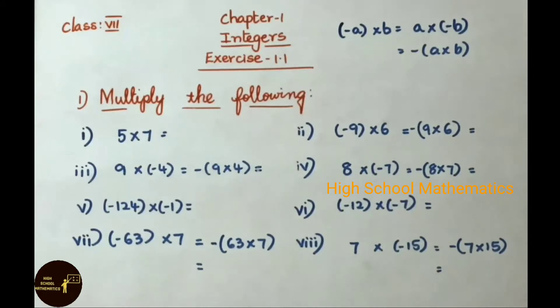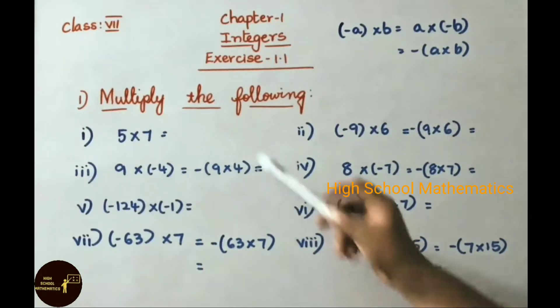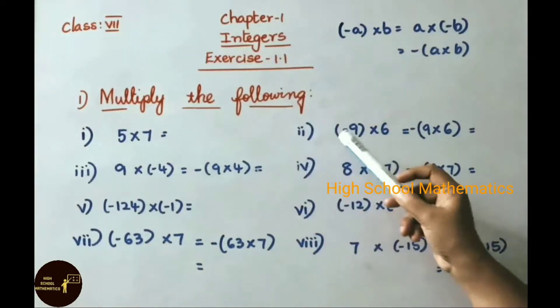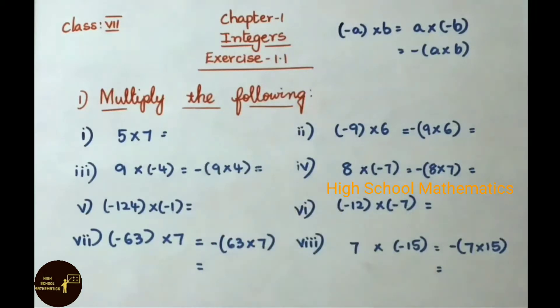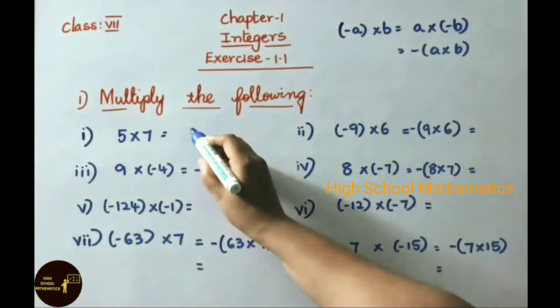Now let us see the first sum: multiply the following. See the first one — 5 into 7. The answer is 35.